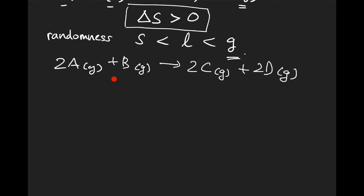We can refer to the coefficients as the number of gases. So from here, we know that we have 3 gases in the reactants (2A and 1B), and on the other hand, we have 4 gases in the products (2C and 2D).